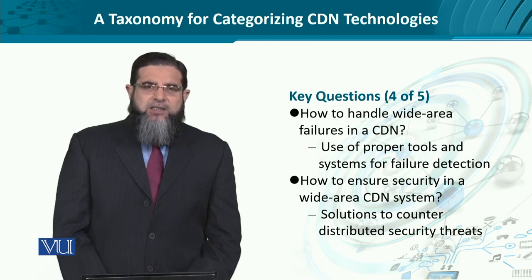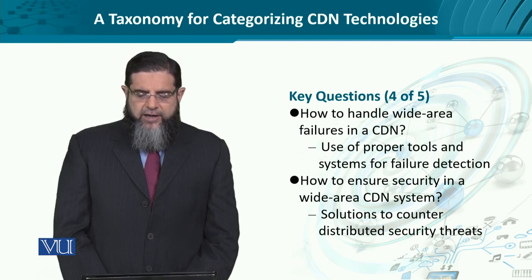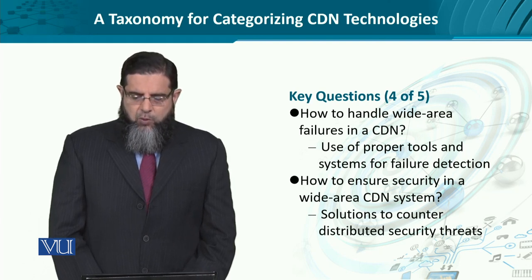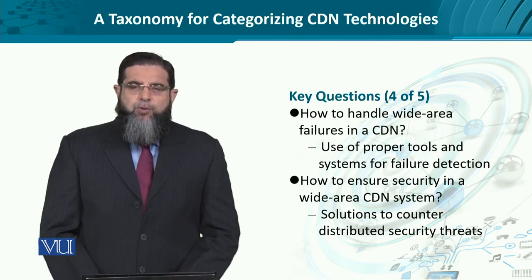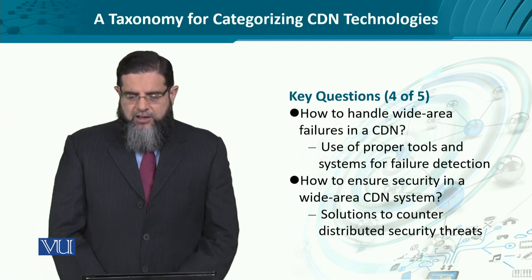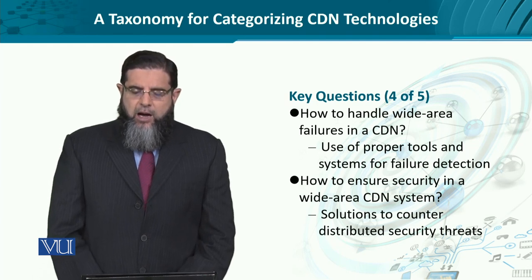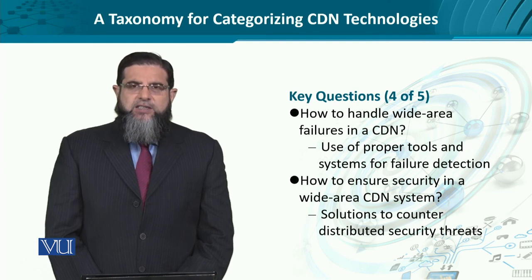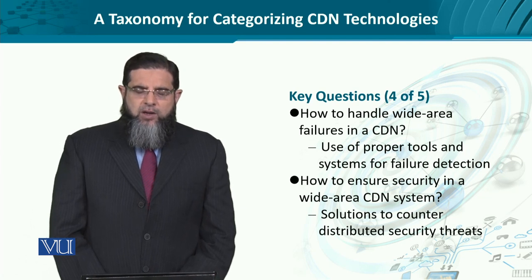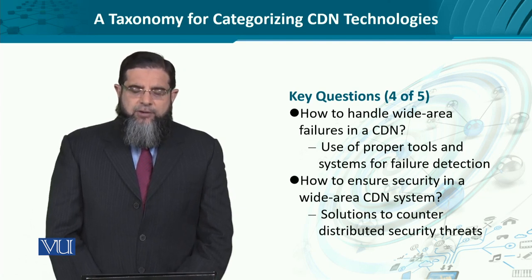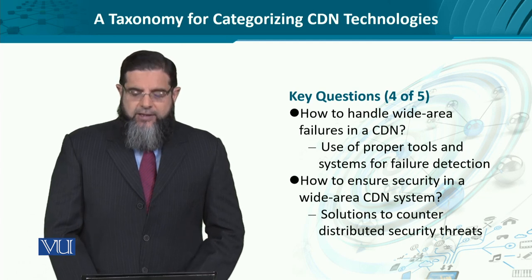Regarding robustness, reliability, and security, certain questions also come to mind. For instance, how to handle wide area failures in CDN? What are the proper tools for detecting failures versus faults versus errors? These could be alerts, outright failures, or mere alarms. How to ensure security in a CDN system? Because when something is distributed, there could be many actors — adversaries — which could play a more important role given the widened attack surface.